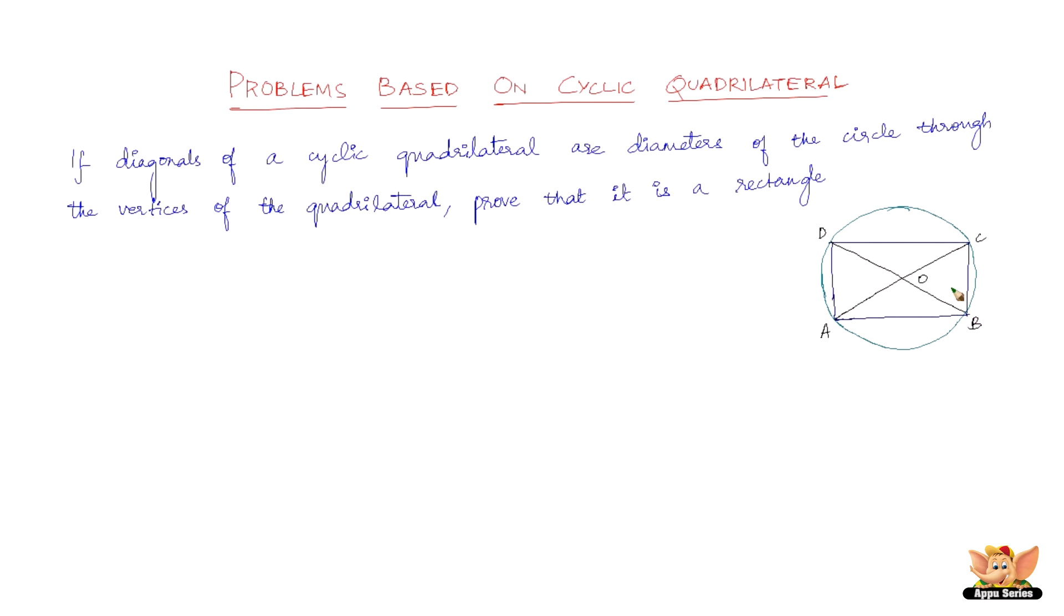...to prove that ABCD is a rectangle as well. It is a cyclic quadrilateral, no doubt, but we haven't solved many problems which have got a rectangle in a circle, so how do we go about proving this?